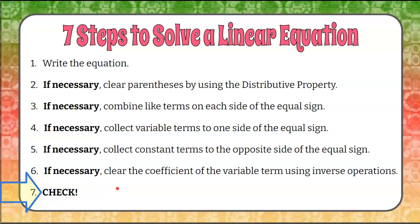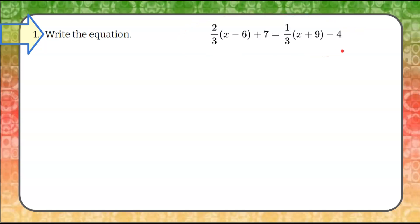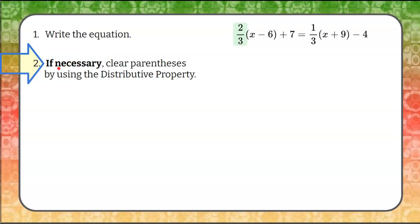We're ready to perform all seven steps on an equation. Step one: we're going to write the equation. Here is our linear equation. This example is going to require all seven steps so you can see how this checklist works. Step two: if necessary, clear parentheses by using the distributive property.